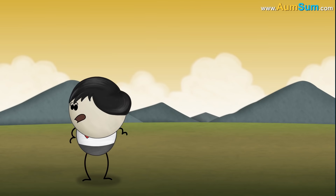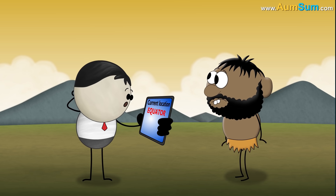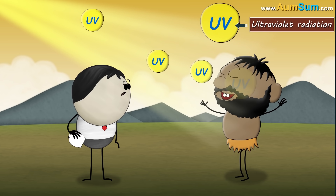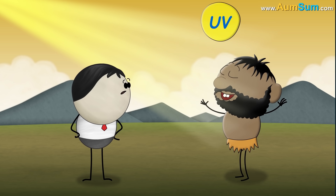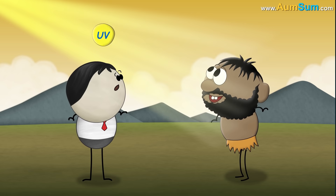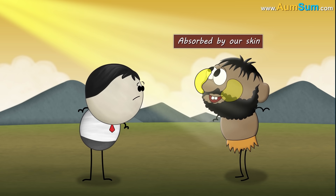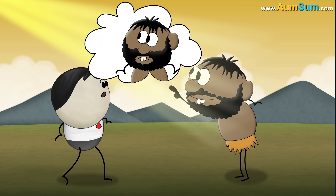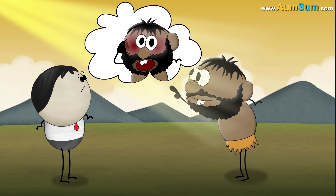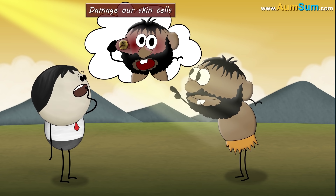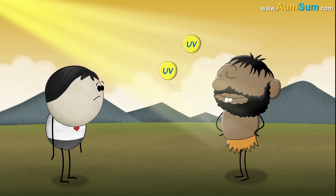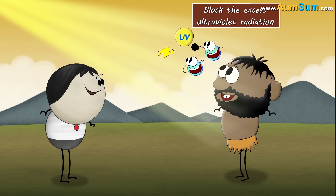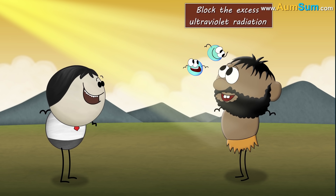Millions of years ago, people living near the equator received a lot of sunlight and ultraviolet radiation. Ultraviolet radiation is actually absorbed by our skin to produce vitamin D. But excess radiation can damage our skin cells. Hence, the skin of these people produced more melanin to block the excess ultraviolet radiation.